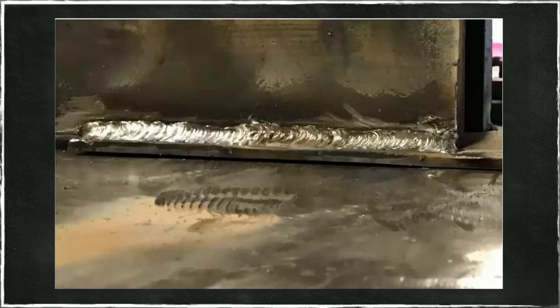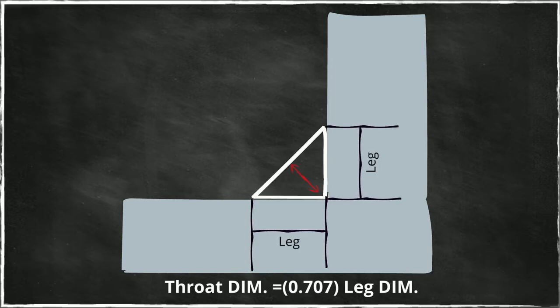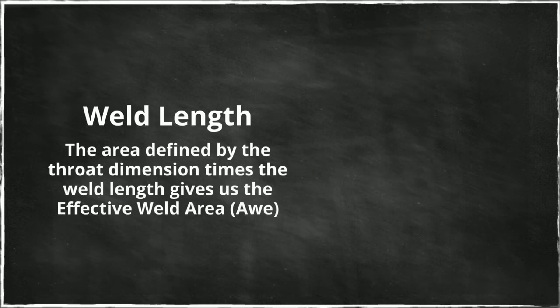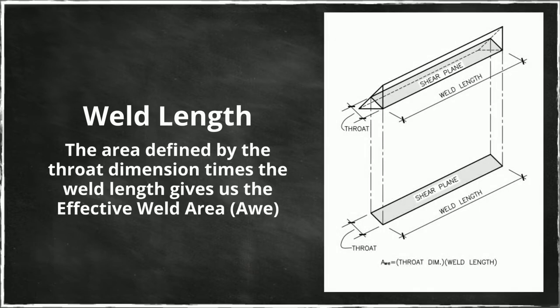For design, we will make a fundamental assumption that the weld surface is flat and the weld cross section is triangular. The dimension of interest is called the throat. Of course, the weld will have length. The area defined by the throat dimension times the weld length gives us an effective weld area. Here's our throat length and the shear plane is the effective weld area.